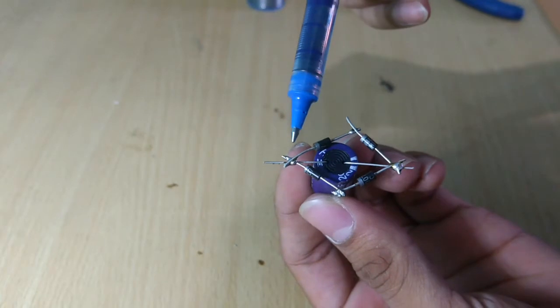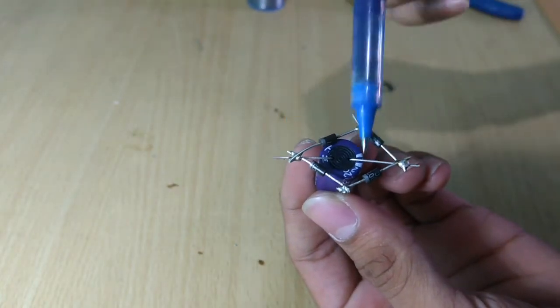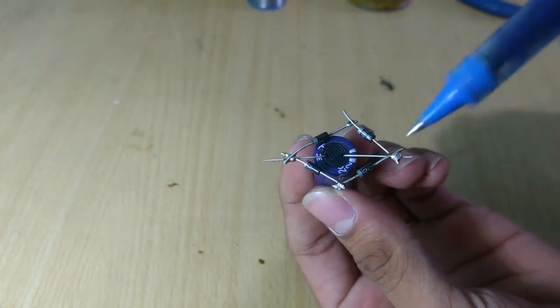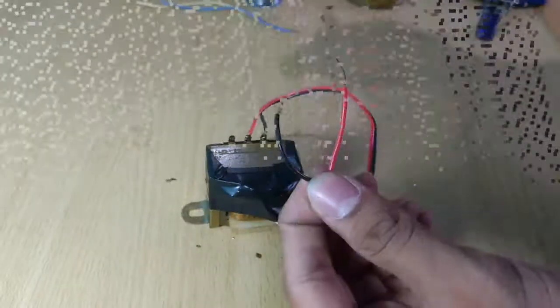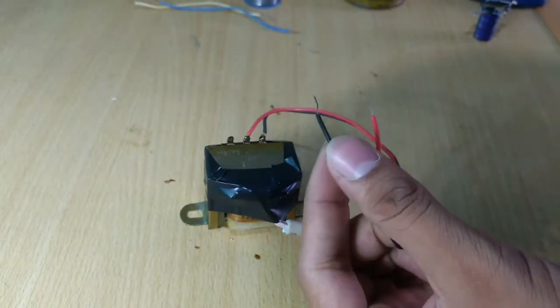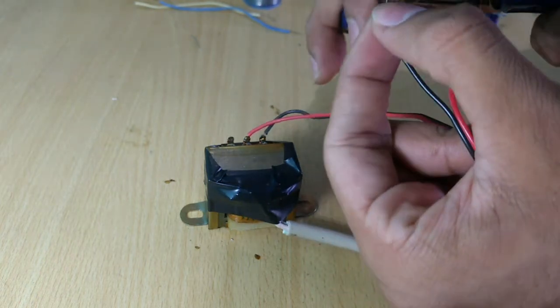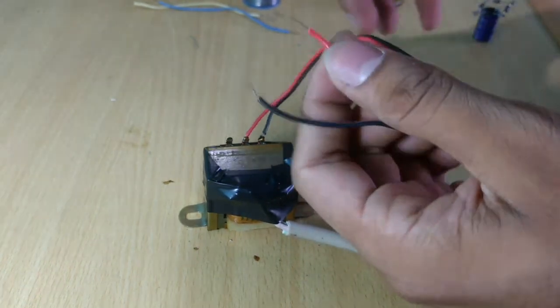So once the soldering or the capacitor is attached, the two points or the two junctions where the capacitor is attached will be the positive and negative output of the DC voltage. And the other two are the AC inputs.